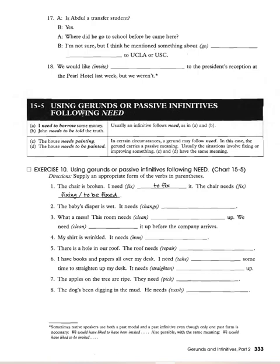Using gerunds or passive infinitives following 'need': 'I need to borrow some money' — infinitive. 'John needs to be told the truth' — passive infinitive. The verb 'need' can also take a gerund: 'The house needs painting.' In this case the gerund carries a passive meaning — it means someone needs to paint the house. Usually these situations involve fixing or improving something. 'The house needs painting' has more emphasis than 'the house needs to be painted.'